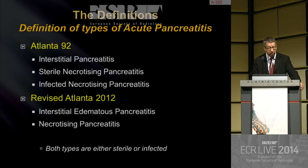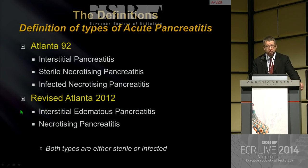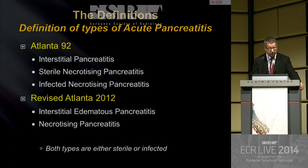The former Atlanta 1992 classification differentiated three types of pancreatitis: interstitial pancreatitis and necrotizing pancreatitis, either sterile or infected. The new Atlanta 2012 classification has only two types: interstitial edematous pancreatitis and necrotizing pancreatitis, which is more clear. Both types may be either sterile or infected. Infection of interstitial edematous pancreatitis is quite a rare situation.